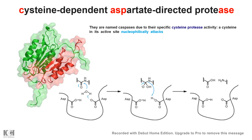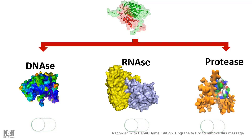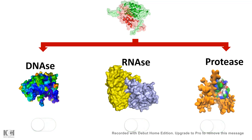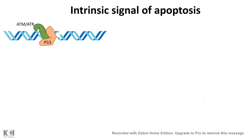Caspase cleaves the target protein by a subsequent nucleophilic attack. Caspase can activate several other dangerous proteins which are normally dormant inside the cell, like DNases, RNases, and proteases. Normally these proteins are dormant inside the cell, but caspase can activate them, and thereby an overall destruction program can be initiated inside the cell.